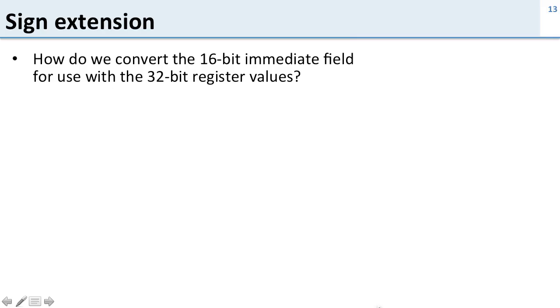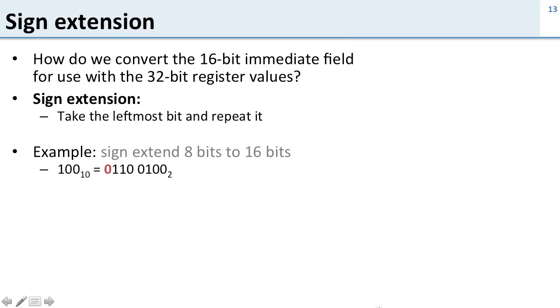So we talked about how we can put this 16-bit value in there, but how do we use it with the 32-bit register values? All the values we're using in the MIPS processor are 32-bit values, but now we have this 16-bit immediate. How do we add a 16-bit value to a 32-bit value? And the answer to this is we use sign extension. We're going to take the 16-bit value and extend its sign in order to make it into a 32-bit value. And this is quite straightforward.